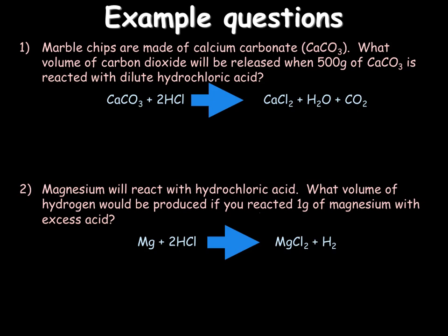Here are 2 final example questions. Again I want you to pause the video and attempt to work these out. For question 1 we are looking at marble chips which are made of calcium carbonate, CaCO3. What volume of carbon dioxide will be released when 500 grams of CaCO3 is reacted with dilute hydrochloric acid? And for number 2, magnesium will react with hydrochloric acid. What volume of hydrogen would be produced if we reacted 1 gram of magnesium with excess acid?